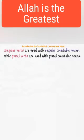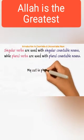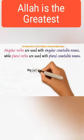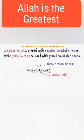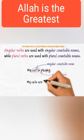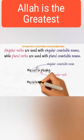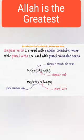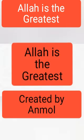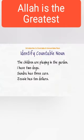while plural verbs are used with plural countable nouns. For example: 'My cat is playing' — cat is a singular countable noun, 'is' is a singular verb. 'My cats are hungry' — cats is a plural countable noun, 'are' is a plural verb. Now let's start with uncountable nouns.